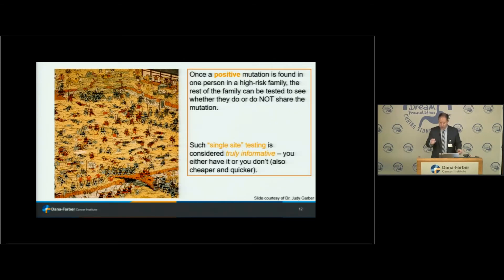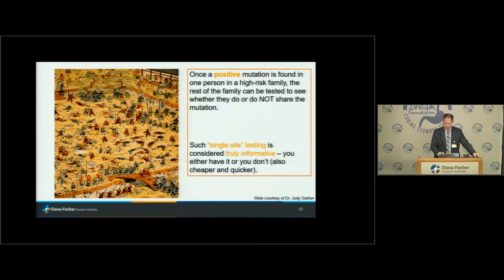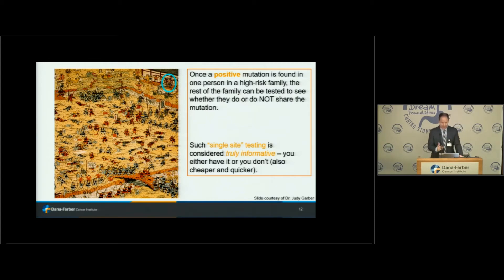It becomes more black and white once we find a mutation in the family that we think we understand — one explaining the risk in that family. We can then cascade that information throughout the family and offer testing for that same genetic factor to that person's siblings, children, parents, and relatives. That's where we get a truly black-and-white answer: you either have it or you don't. Once we know what factor is causing the cancer phenotype in the family, we can offer what we call single-site testing. It's quick, it's cheap, and it's like a game of Where's Waldo — once you know where to look, it pops out every time.